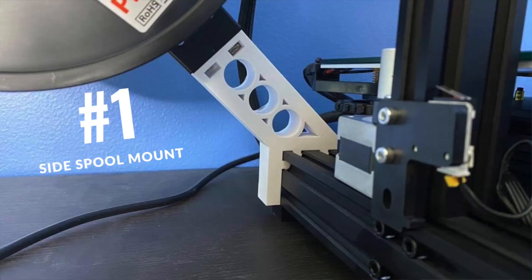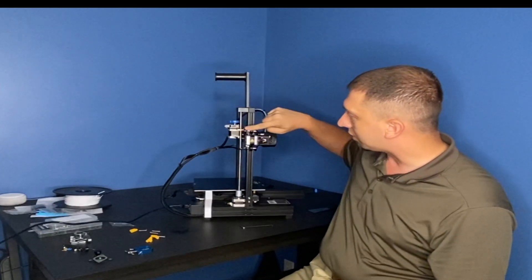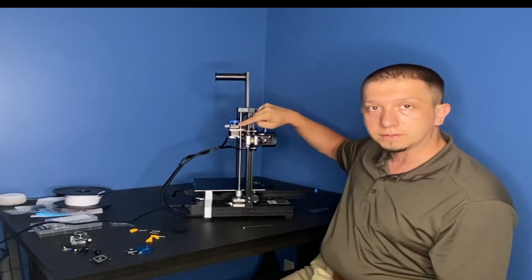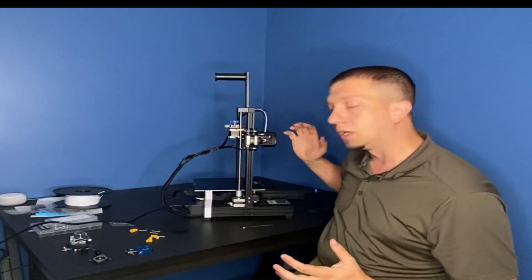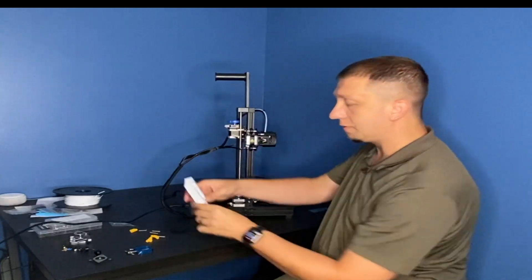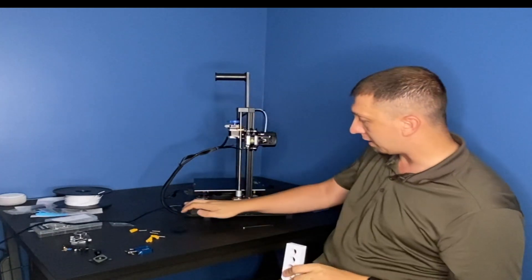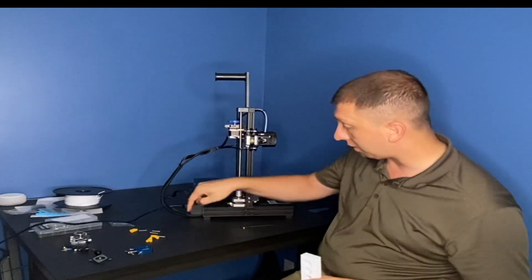And on to number one. I never have cared for the printer spool being up top and having the filament going in a loop to get here. I never did like that. So off the internet, you can find this model relatively easy. You can print a new arm that will mount on your frame here. All you got to do is take the cap off the end piece here.